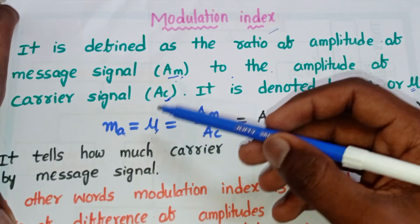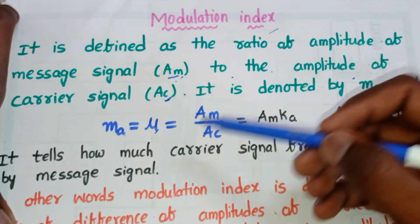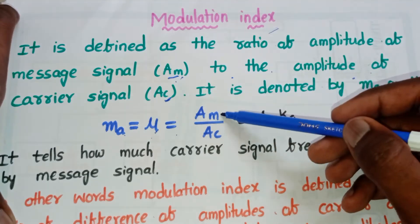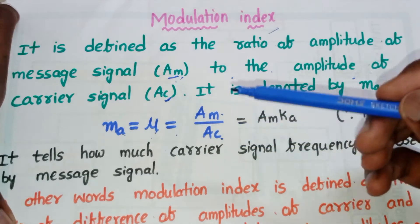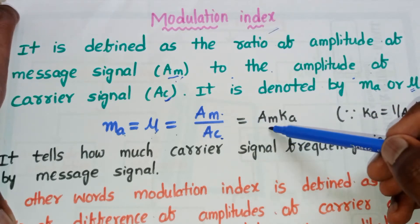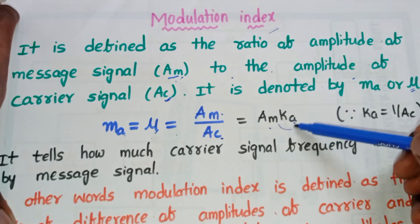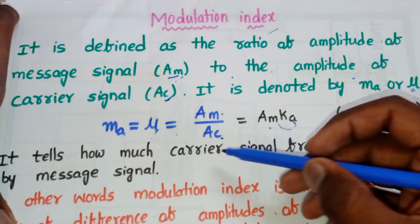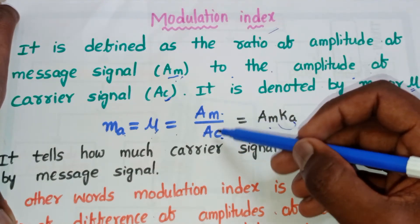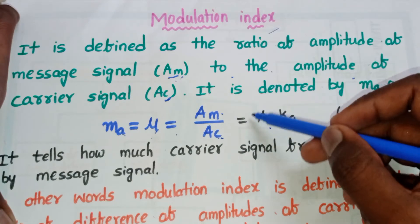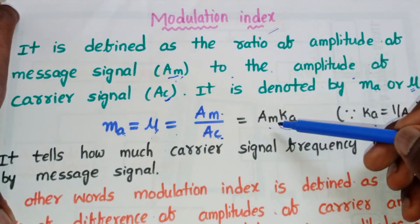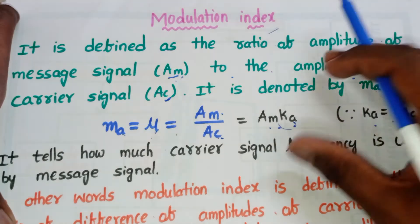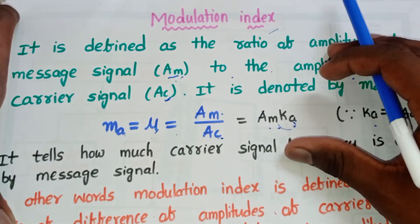The modulation index equals the ratio of the amplitude of the message signal (Am) to the amplitude of the carrier signal (Ac). This can also be written as Am multiplied by Ka, where Ka = 1/Ac. We simply replace 1/Ac with Ka to form another representation of the modulation index.